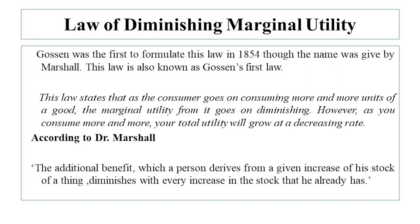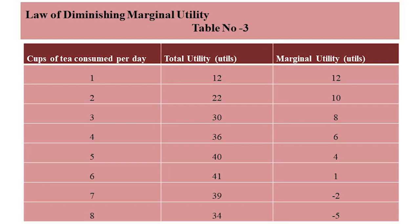As you consume more and more, your total utility will grow at a decreasing rate. Marshall stated the law as: the additional benefit which a person derives from a given increase of his stock of a thing diminishes with every increase in the stock that he already has. Consider again the table presenting total and marginal utilities derived by a person from cups of tea consumed per day.